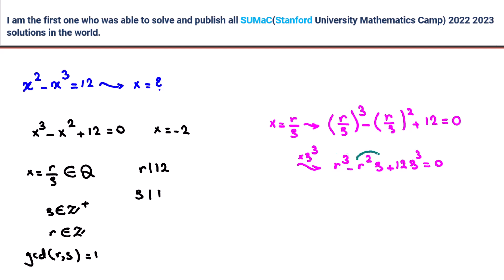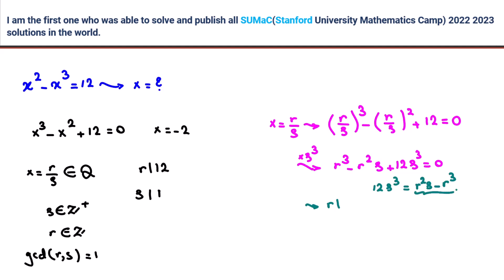Do you agree this term is a multiple of r, and this one is also a multiple of r? If all terms except one are multiples of r, then that remaining term must also be a multiple of r. So we can conclude: r divides what? If you take all terms to the right side, the right side is a multiple of r, so r divides 12s³.